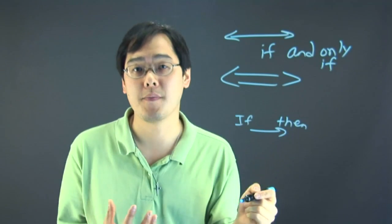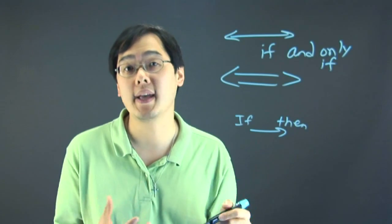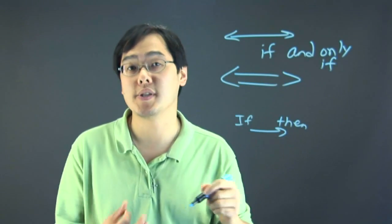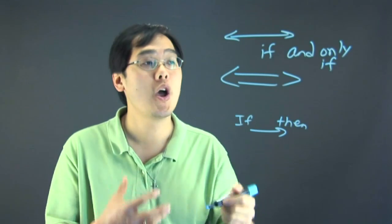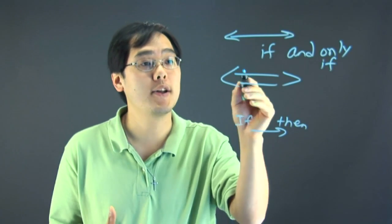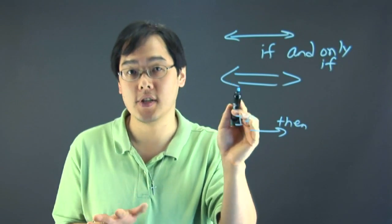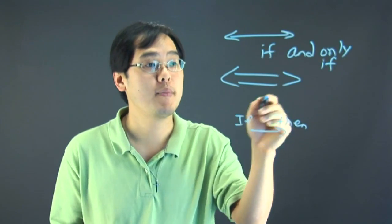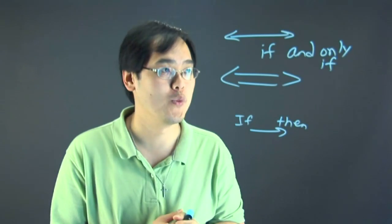If and only if is a lot different from that because it's actually a two-way street. What this means is both sides of a particular equation or theorem will have to hold up. In other words, if one part of it does not hold true, then automatically the other side will not hold true. So they both basically go down together.